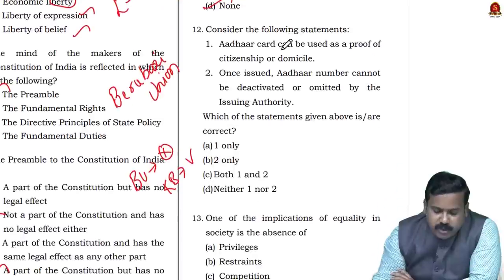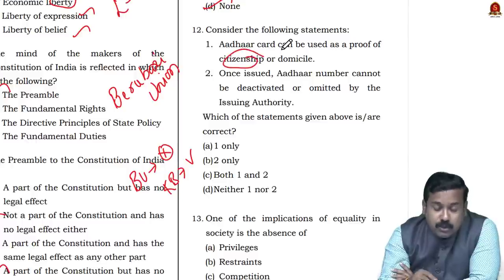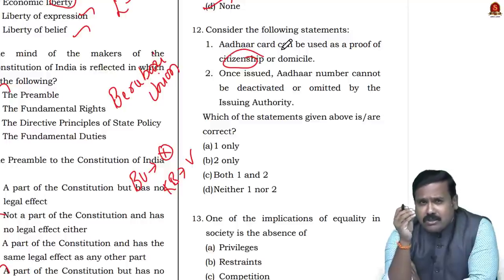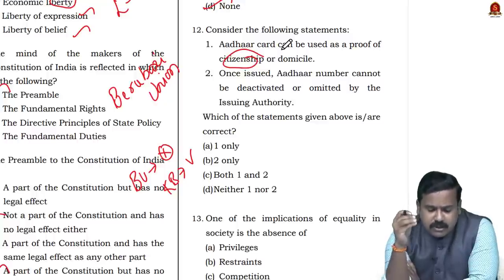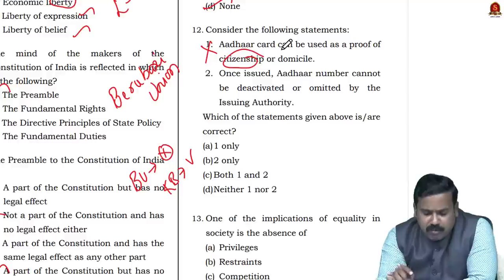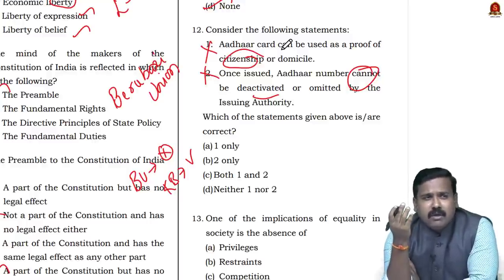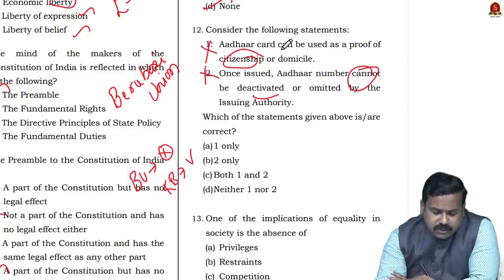Question 12: About Aadhaar — Aadhaar card can be used as proof of citizenship? No. Aadhaar is a residence proof, not a citizenship document. Even if you are not a citizen of India, you can apply for Aadhaar as long as you are a resident. There is no specific card for citizenship in India. Second statement: Once issued, Aadhaar number cannot be deactivated or cancelled — No, this is also wrong. It can be deactivated if obtained by fraud or other conditions under the Aadhaar Act. So the answer is D.